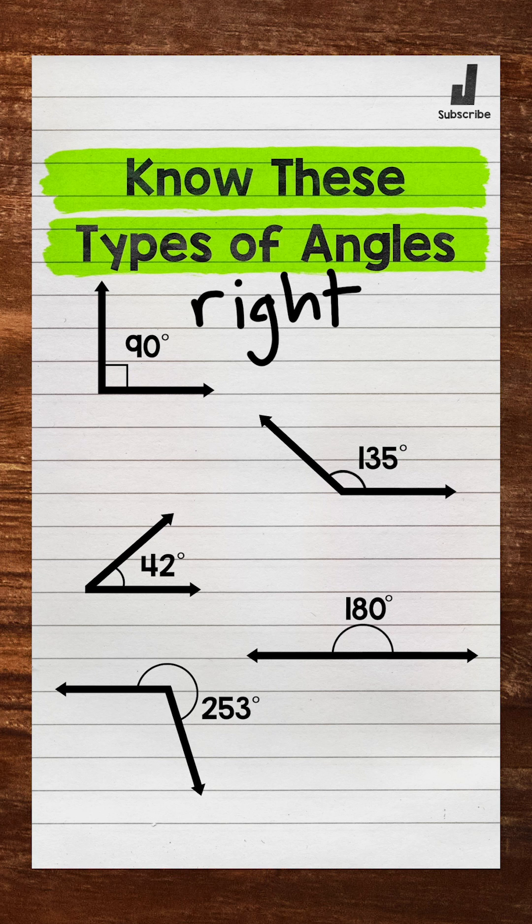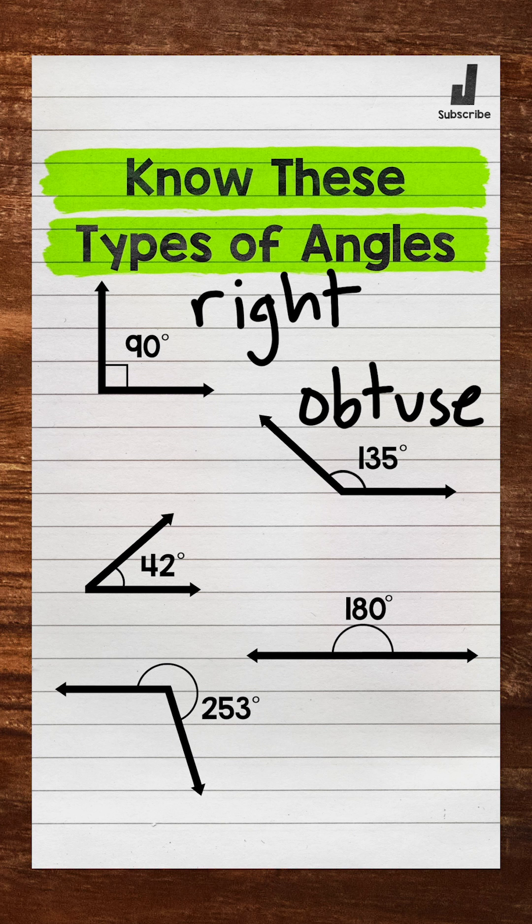Next, we have an angle that is 135 degrees. This is an example of an obtuse angle. Obtuse angles are greater than 90 degrees, but less than 180 degrees.